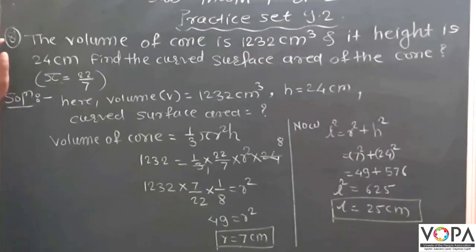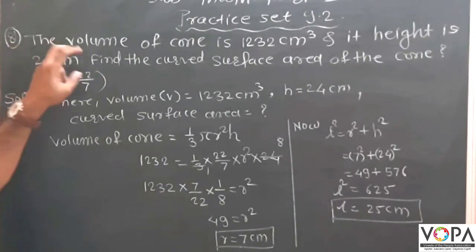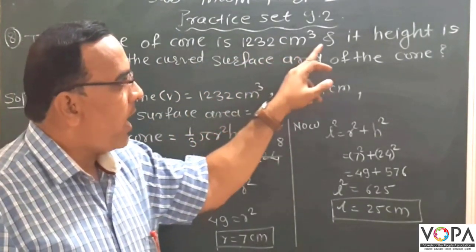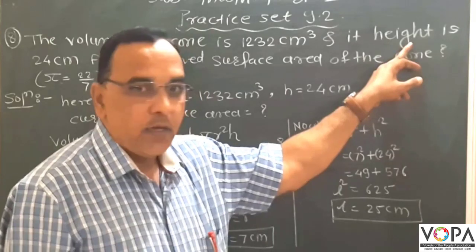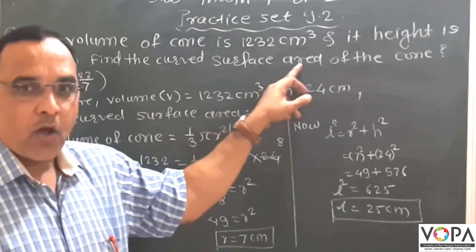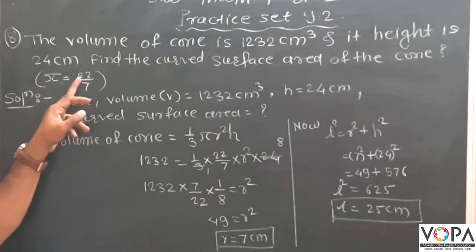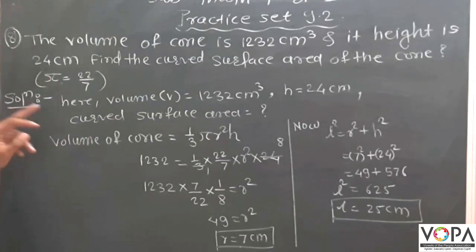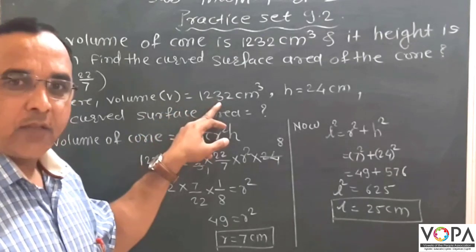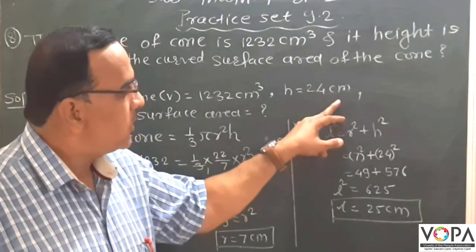Now next problem is number 8. The volume of cone is 1232 cm³ and its height is 24 cm. Find the curved surface area of the cone. Now given, pi is equal to 22 upon 7. Solution, here volume v is equal to 1232 cm³, h is equal to 24 cm, this is the height.